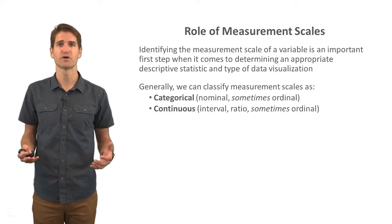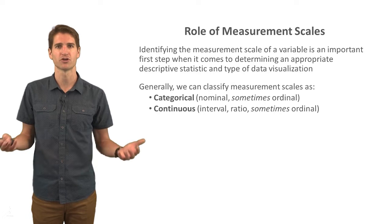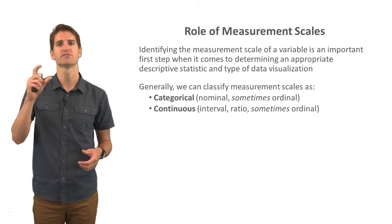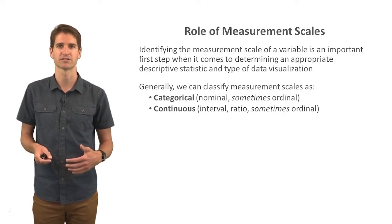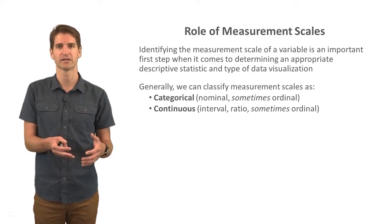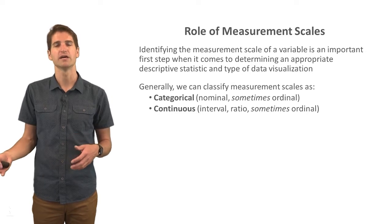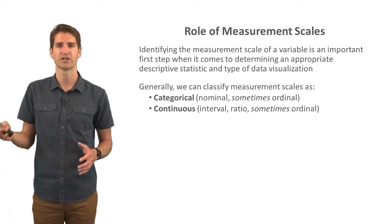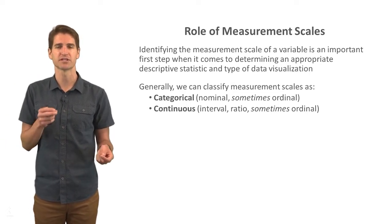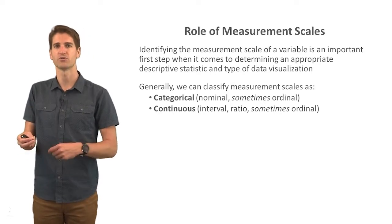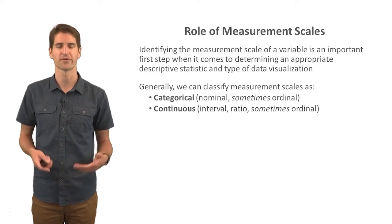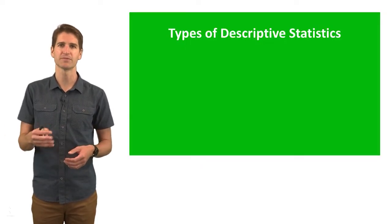When it comes to identifying an appropriate type of descriptive statistic, we do need to know the measurement scale. Generally, we can talk about these measurement scales in terms of two broader categories: categorical versus continuous. Nominal measurement scales are always going to fall under the categorical bucket, but sometimes we might throw ordinal under that as well. Continuous always includes interval and ratio measurement scales, but sometimes we might include ordinal there too. So ordinal is kind of a wild card — sometimes it doesn't fit neatly into categorical or continuous, and you have to decide which is most appropriate given the context.